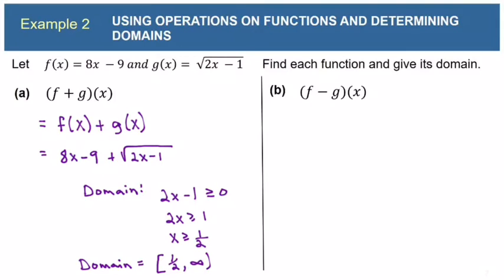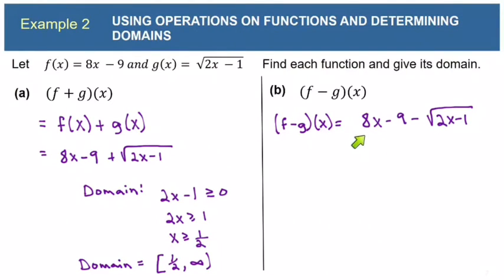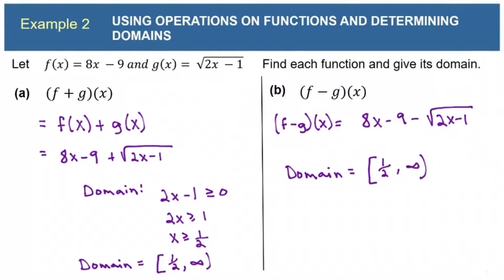For f-g of x, that's f(x) minus g(x), which is 8x − 9 − √(2x − 1). Thinking about the domain, we have the same situation as f+g of x — we just can't let the expression under the radical become negative. Since we've already figured that out, the domain for this f-g function is also [1/2, ∞).